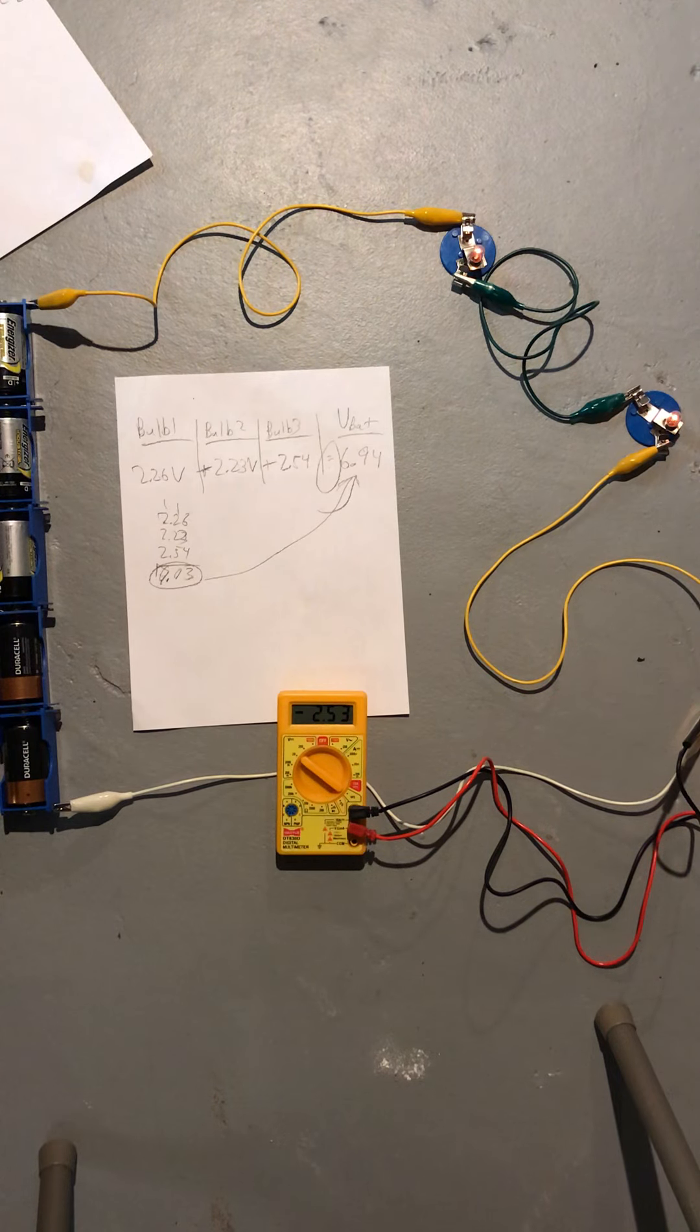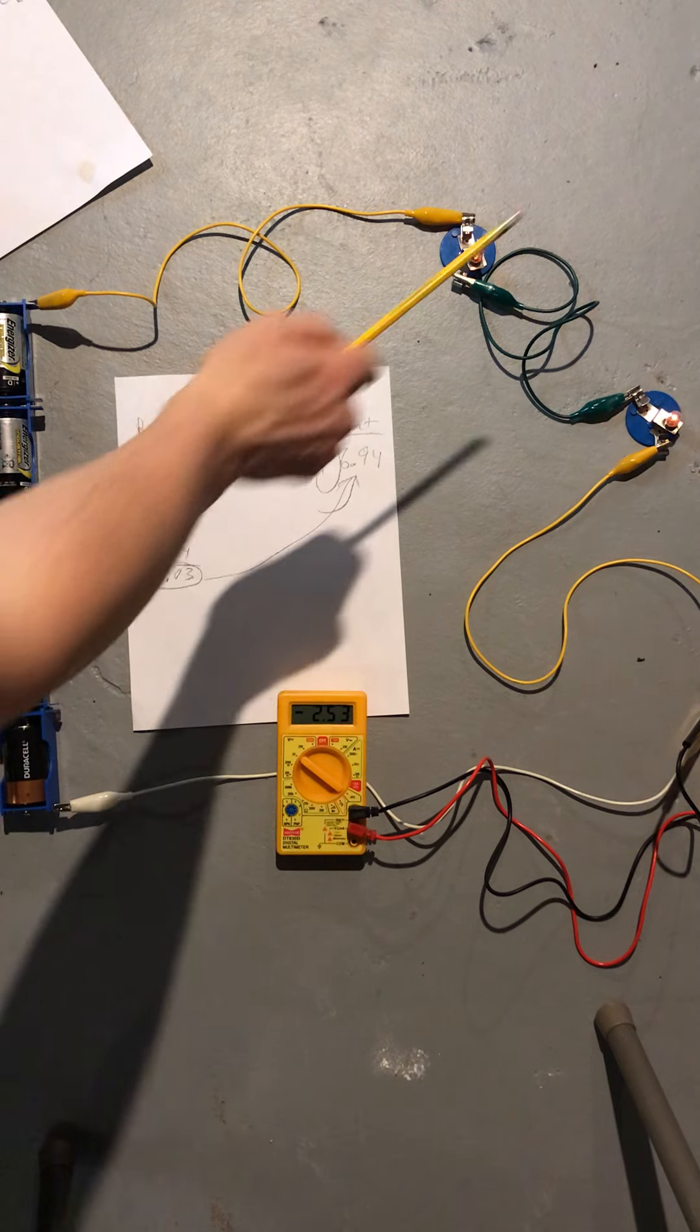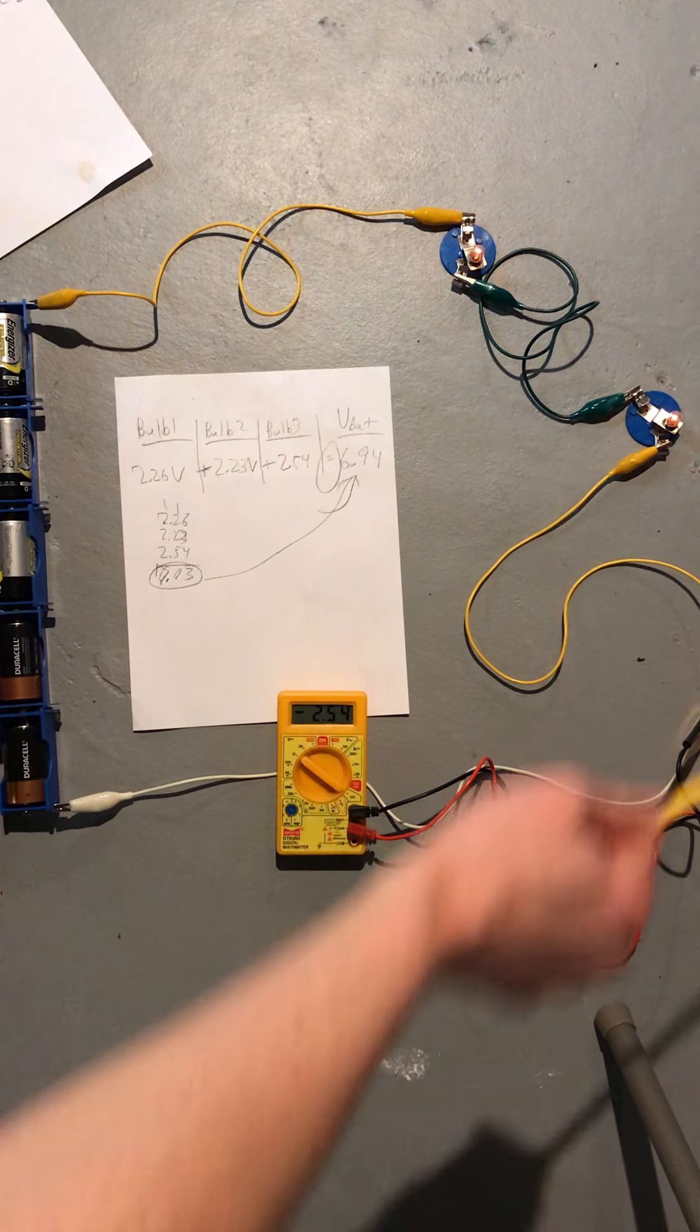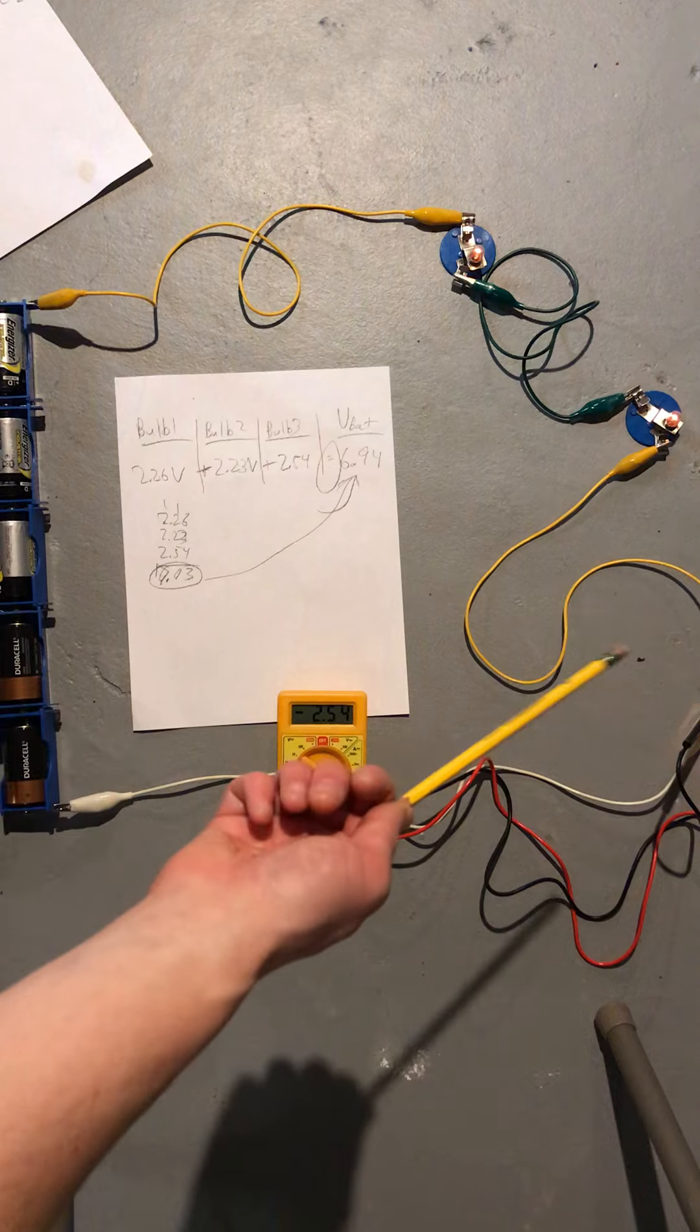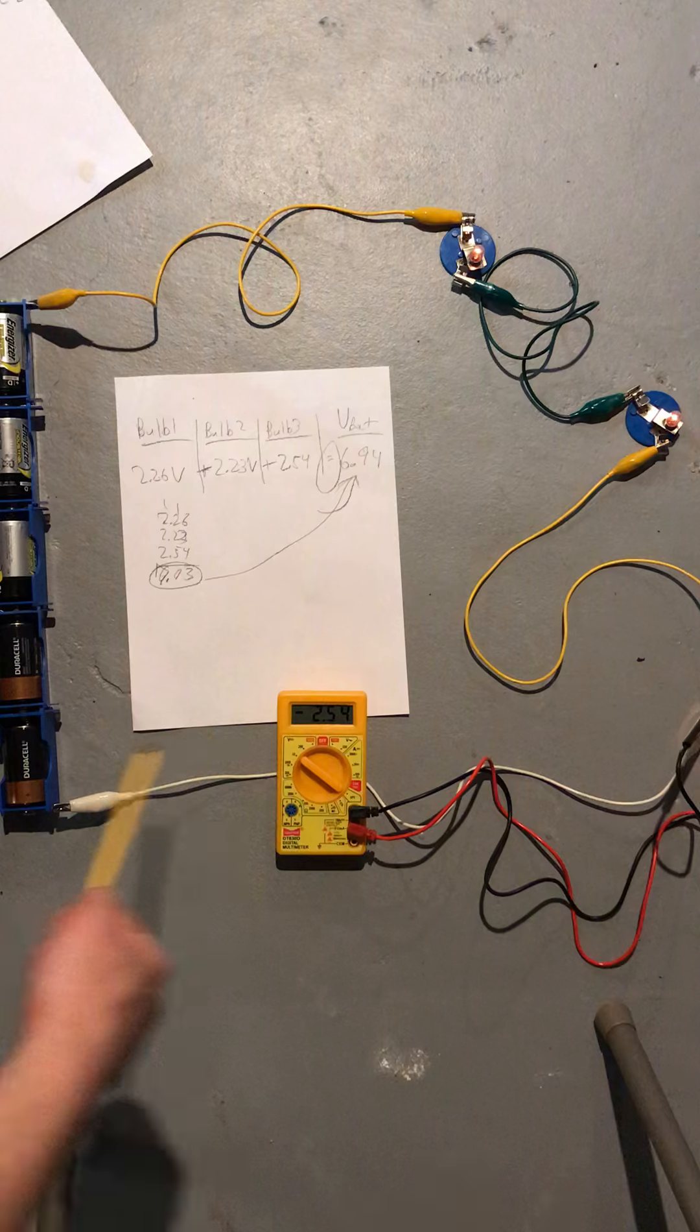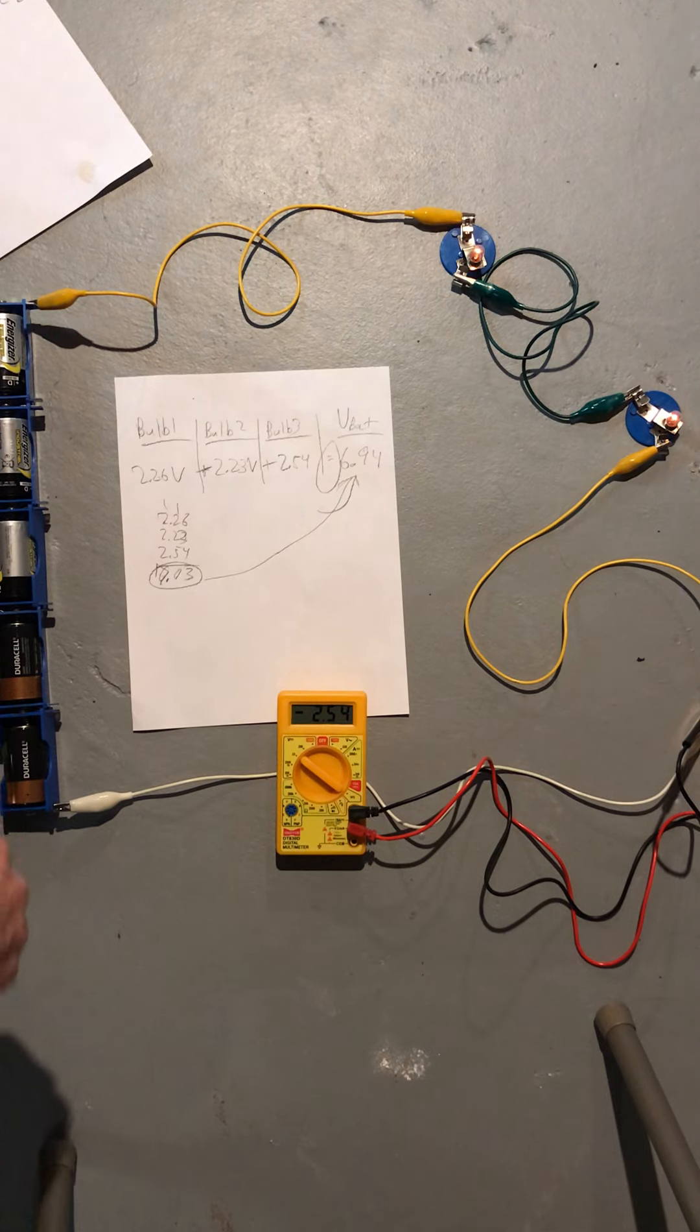So when you add up the voltage from the bulbs, the voltage that is dropped has to equal what you picked up at the battery in a series circuit. And the more bulbs you have, the more you need to split up your voltage between those bulbs, so each one gets less volts and each one is dimmer.